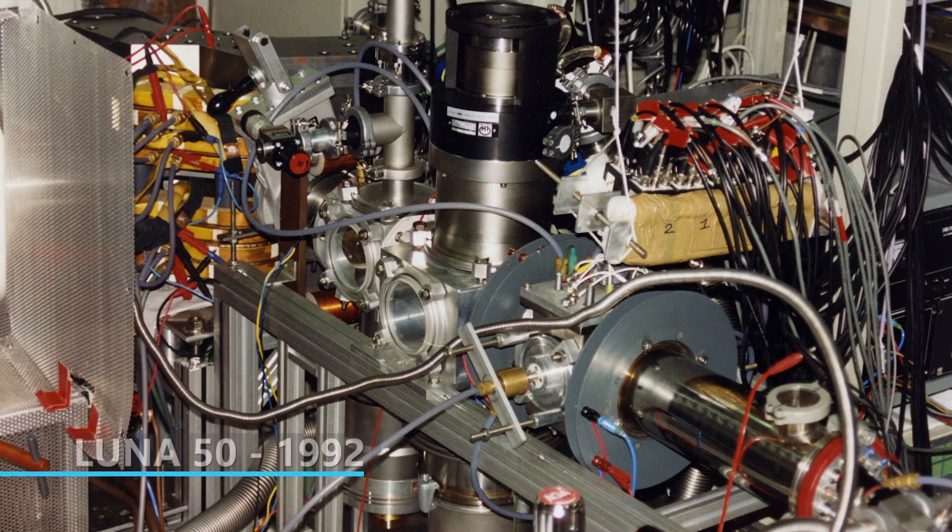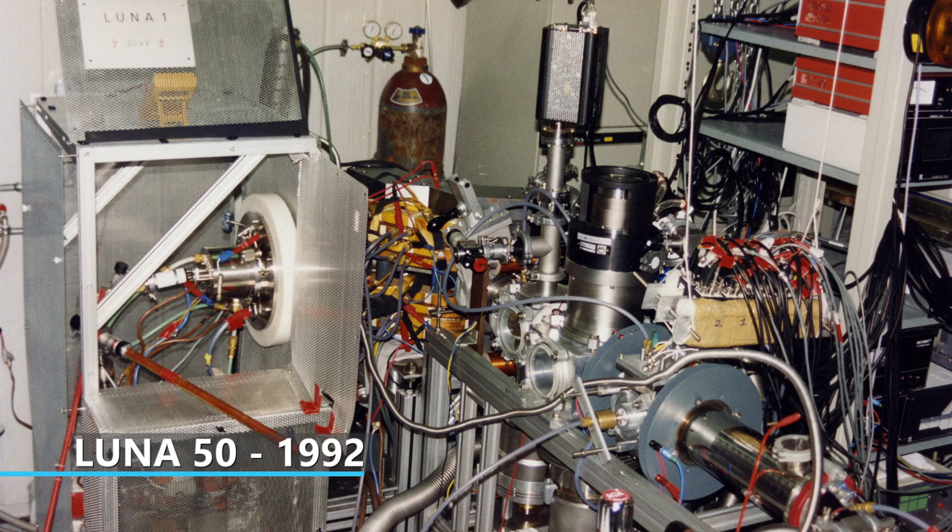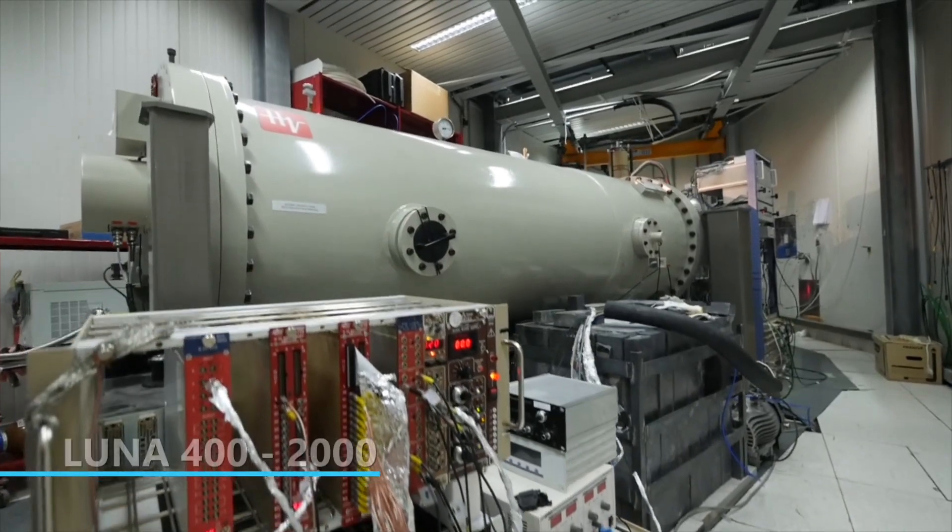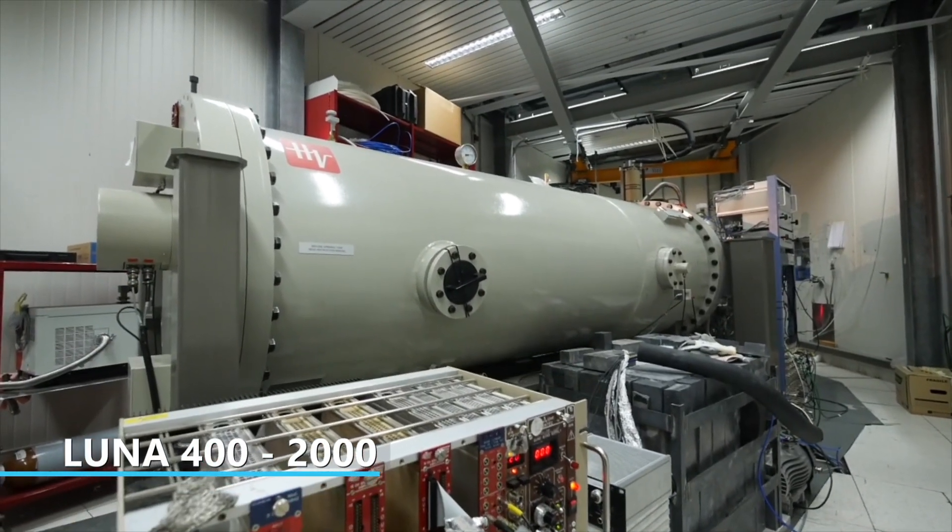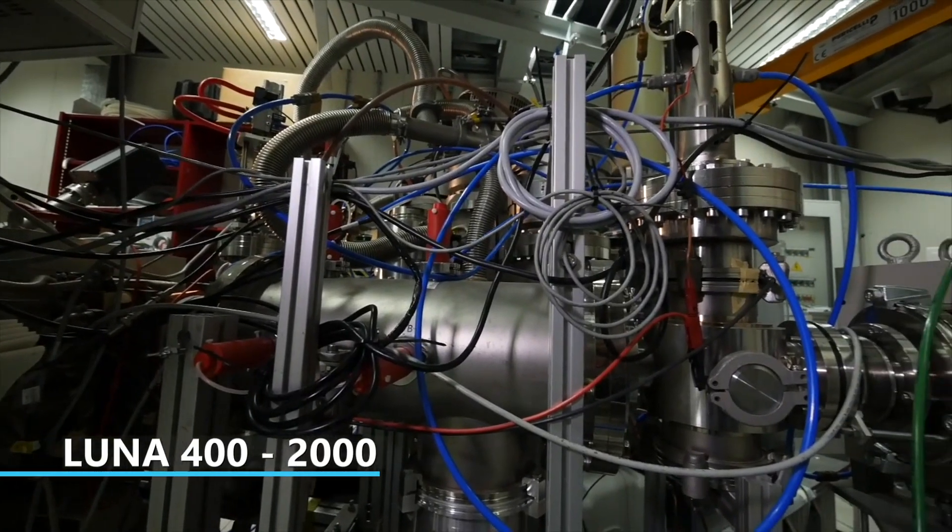At first, a 50 kV accelerator called Luna 50 has been installed, and since year 2000, a 400 kV accelerator called Luna 400 has been in operation.